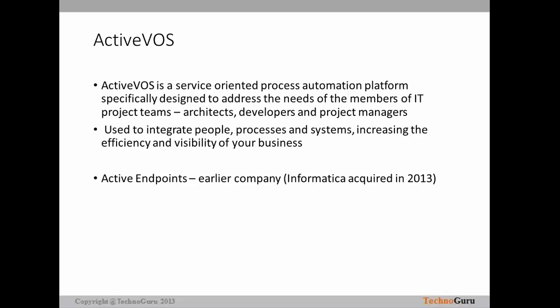So what is Active OS? Active OS is a service-oriented process automation platform, and it is specifically designed to address the needs of members of the IT project teams — such as architects, developers, project managers, and in some cases business users as well. Active OS is a platform by using which we can achieve task management. It is used to integrate people, processes, and systems, which ultimately increases the efficiency and visibility of the business.